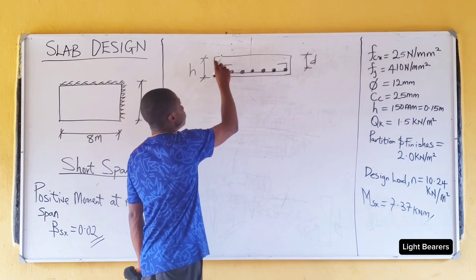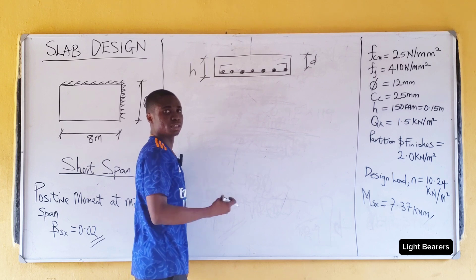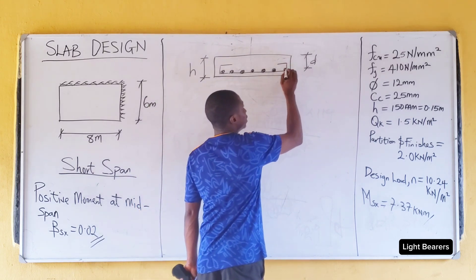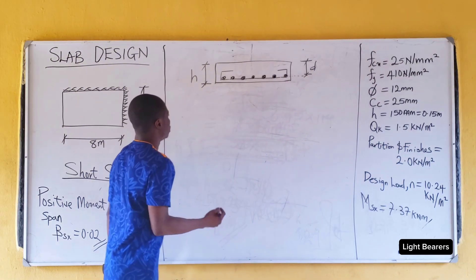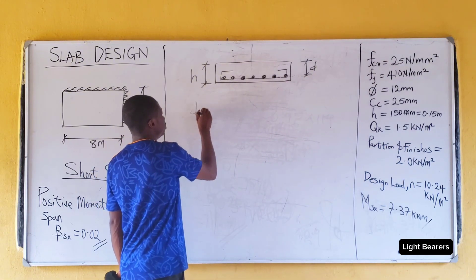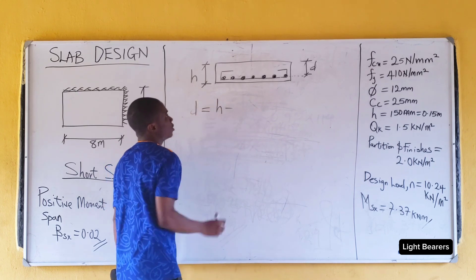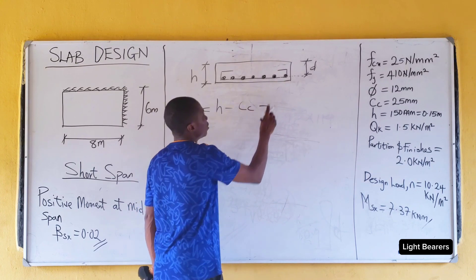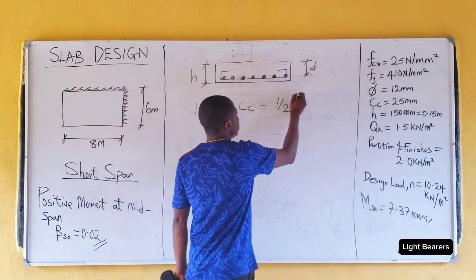This is the main bar. The dotted line is the distribution bar. From the top to half of the main bar is d. So, how do we get the effective depth? Effective depth d equals h minus the concrete cover minus half of the main bar diameter.